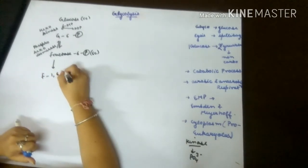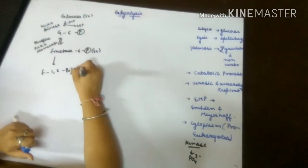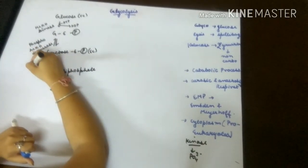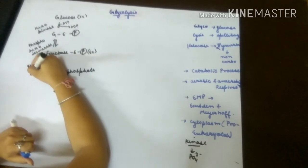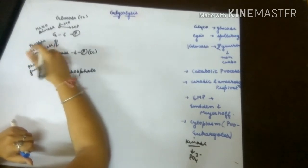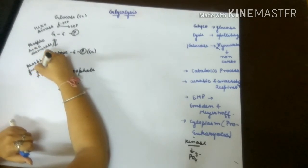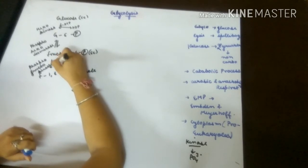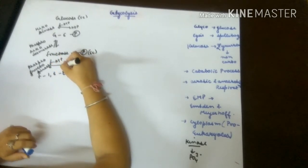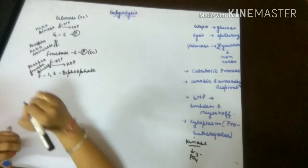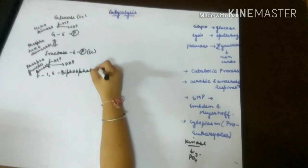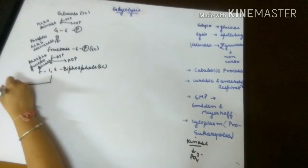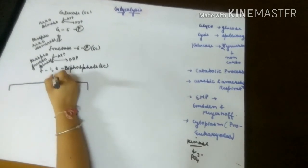Fructose-6-phosphate is then converted into fructose-1,6-bisphosphate with the help of enzyme phosphofructokinase. We use the word kinase here because one more phosphate molecule is being taken from ATP, which is converted into ADP.